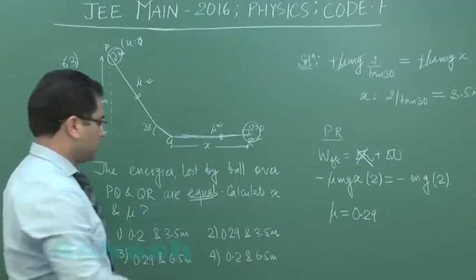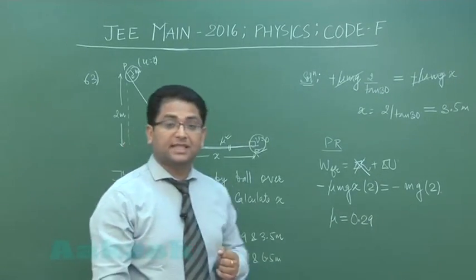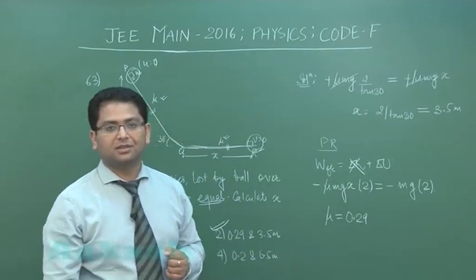I've done it, so the value of mu comes to be 0.29. With the given value of X and the given value of mu, our option would be option number 2. So that was about question number 63. We'll go to question number 64.